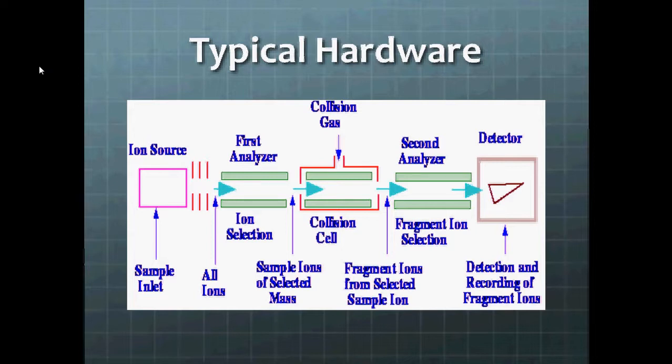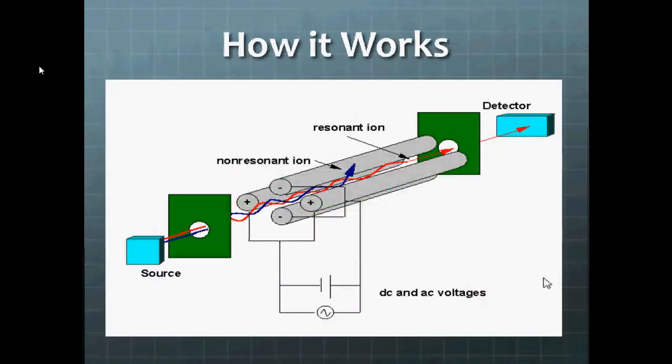And then those that make it through will enter the second quadrupole or the collision cell, where the ions will collide with collision gas and fragment further. Those fragments will be accelerated through the third quadrupole where they'll be filtered again according to mass to charge ratio until they reach the detector, which is usually an electron multiplier.